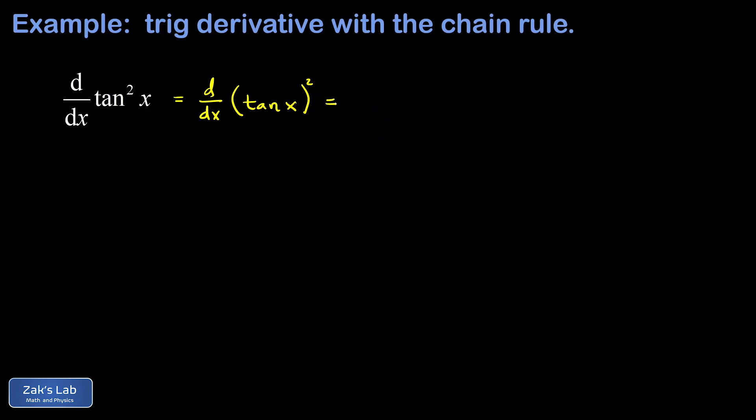When we take the first derivative, we're going to differentiate with respect to that interior function. That means we treat tangent X like a single variable. So we look at it like it's just a Y squared here, and we take the derivative.